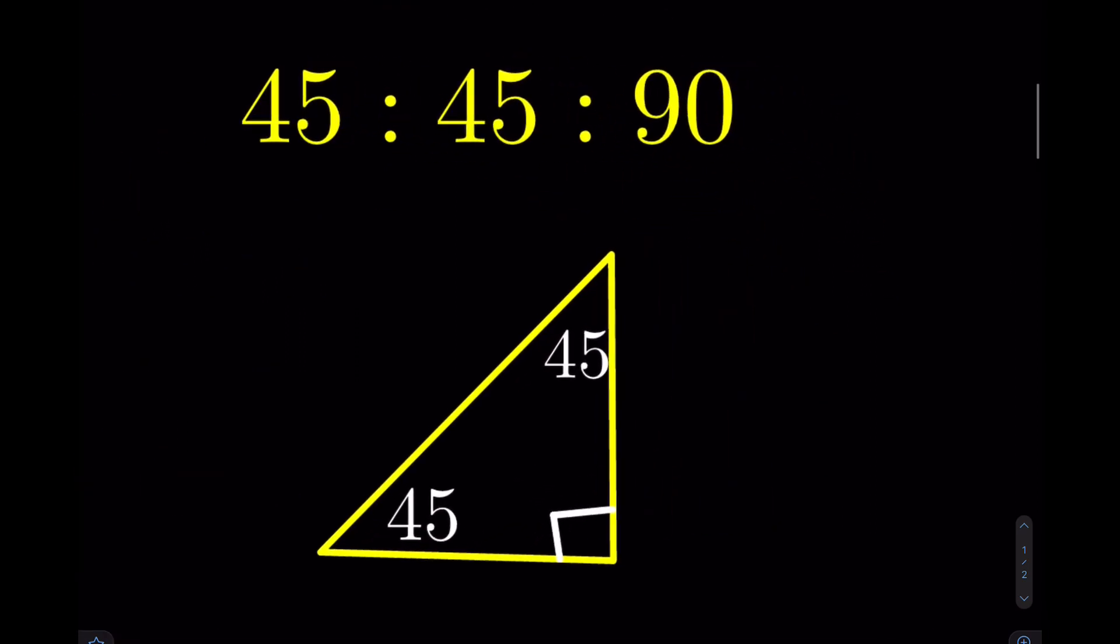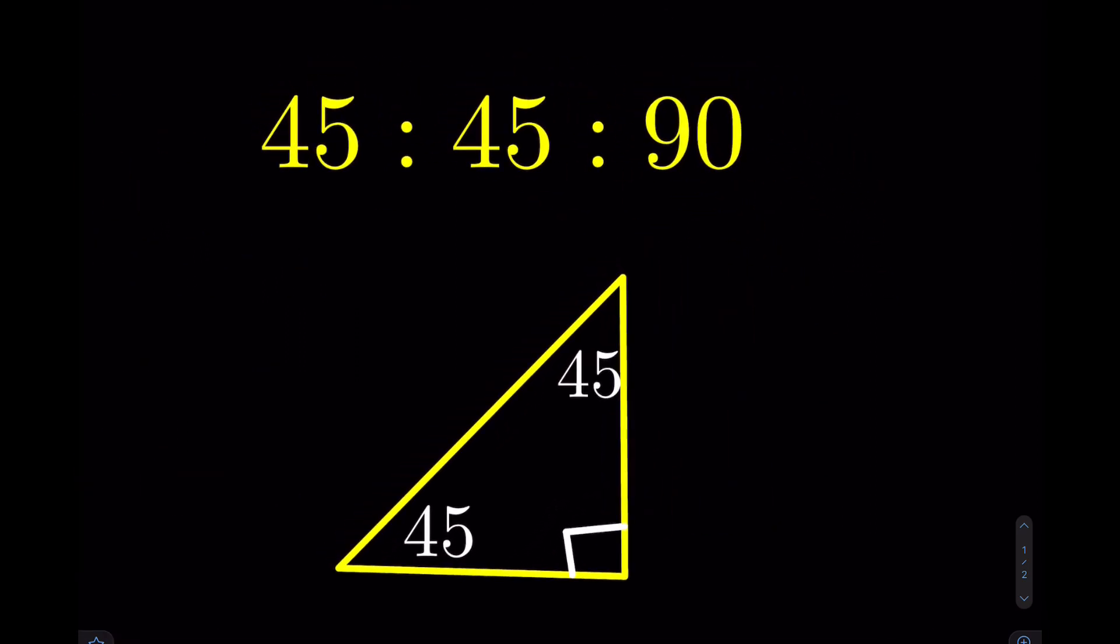Let's try 45, 45, 90. This is a right isosceles triangle. In other words, if this angle is 45, then this side and this side are the same. Because if this is 45 and this is 45, then their corresponding sides must be the same as well. So how does this work or what's the ratio here? Well, it goes X, X, X root 2.